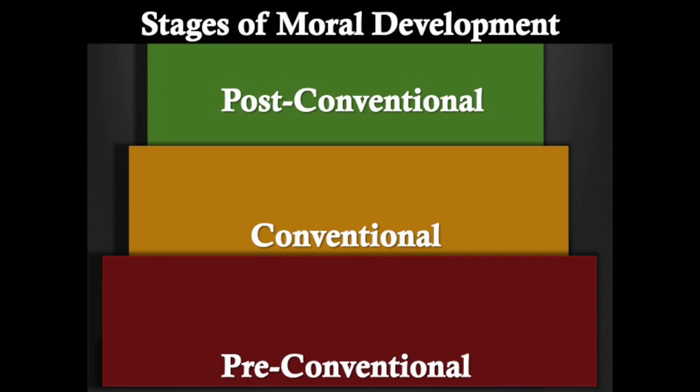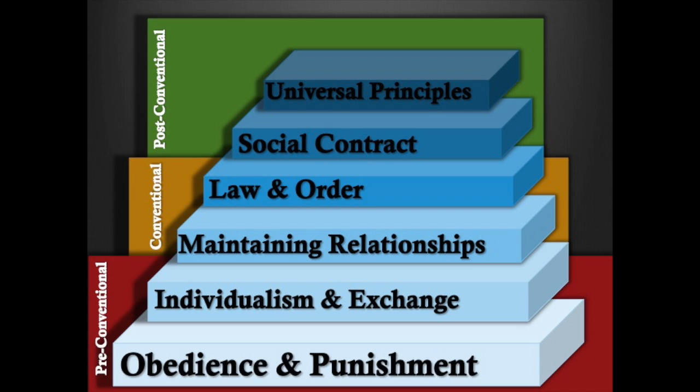Let's review. Kohlberg believed and was able to demonstrate through studies that people progressed in their moral reasoning — that is, their basis of ethical behavior — through a series of stages. He believed there were six identifiable stages which could be more generally classified into three levels. Individuals could only progress through these stages one at a time and could not jump stages; for example, they could not move from obedience and punishment to law and order without passing through maintaining relationships first. They could only come to a comprehension of moral rationale one stage above their own. Kohlberg believed, as did Piaget, that most moral development occurs through social interaction.